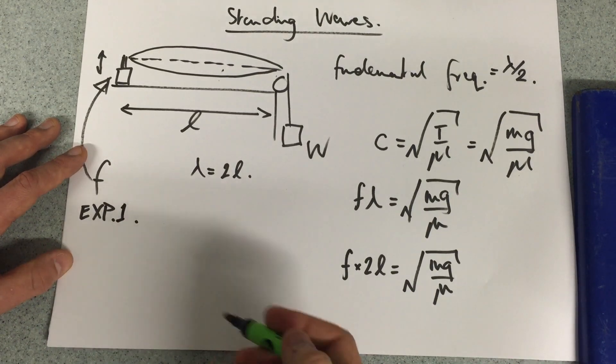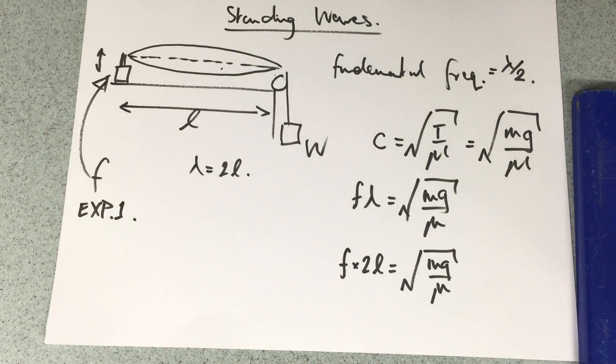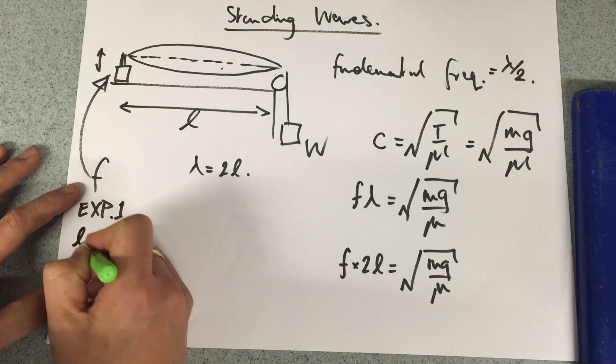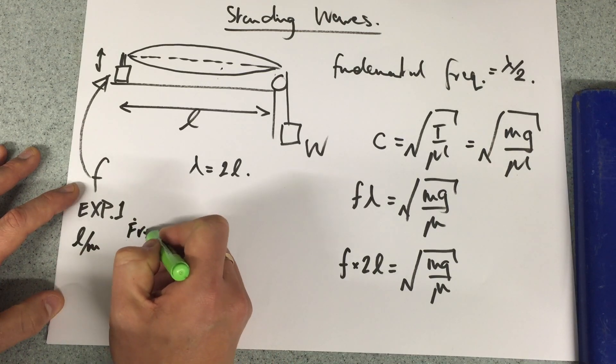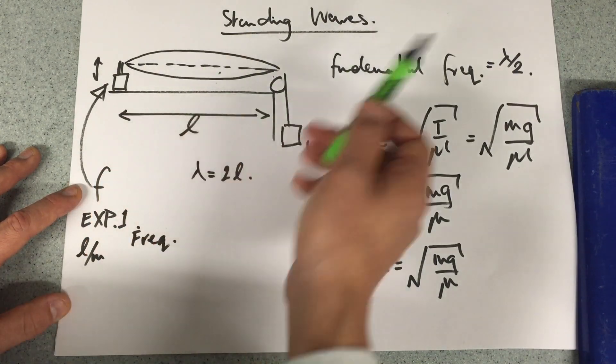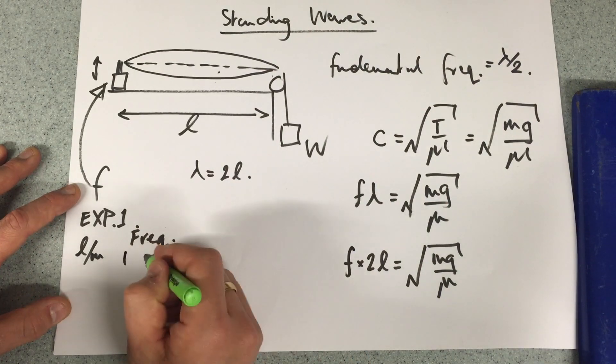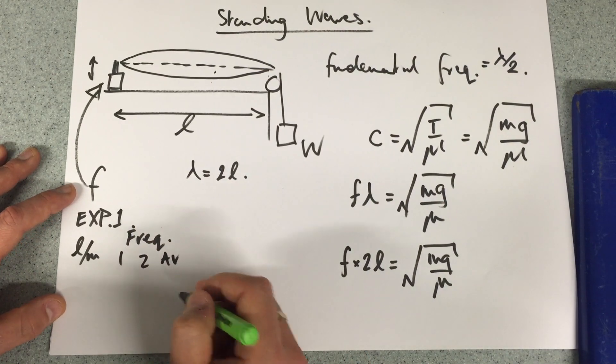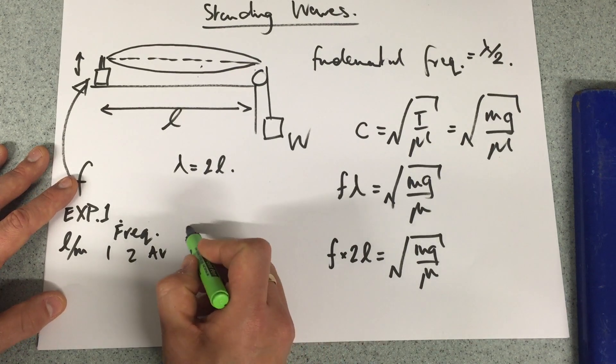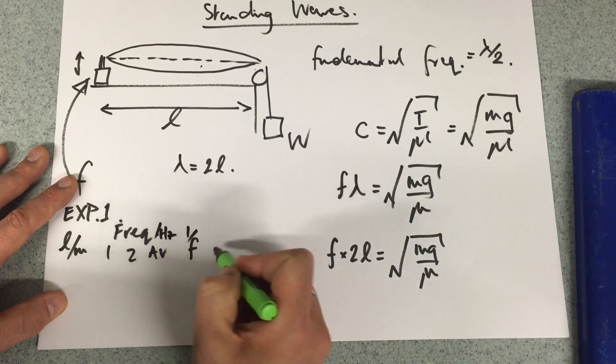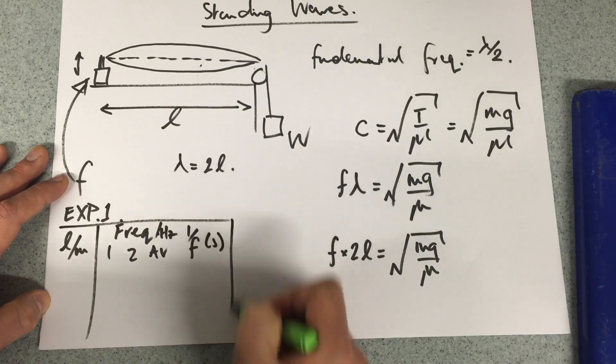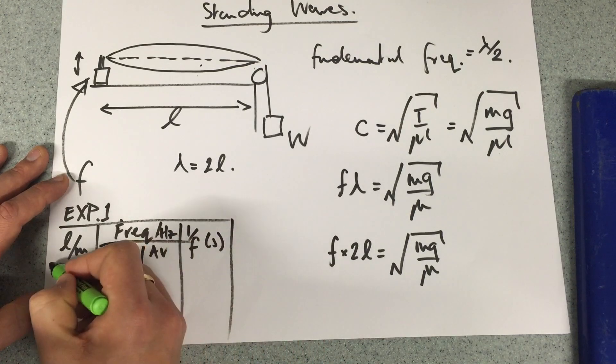In experiment 1, what we would like to change is the length. We look at the length in meters and then the frequency required to create that standing wave. As we decrease the length, we'll have to change the frequency. Once, twice, an average. The frequency and the length are inversely proportional to one another, so we're going to plot 1 over the frequency. That's the first experiment we're looking at.